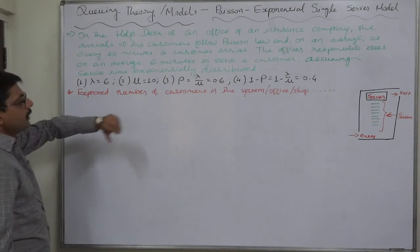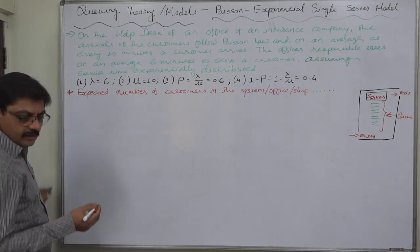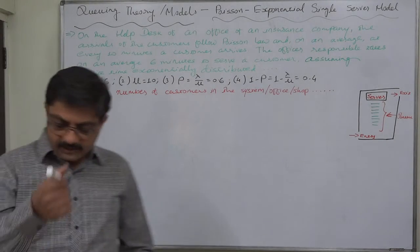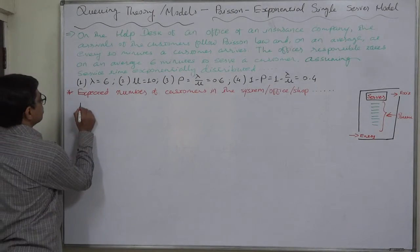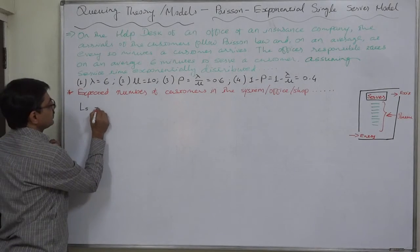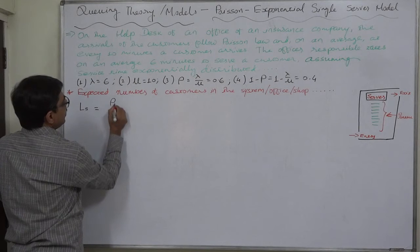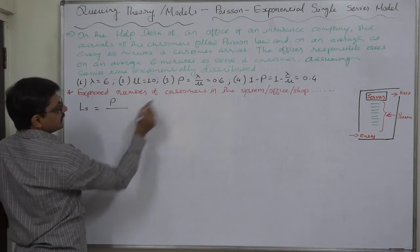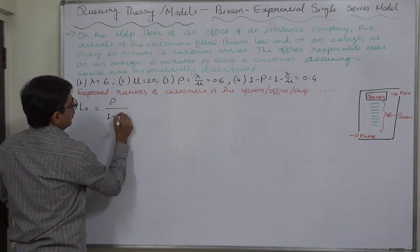Now what is the formula to calculate the expected number of customers? The sign is Ls - expected number of customers in the system. The logic is arrival rate, or rather utilization rate, divided by idle rate.